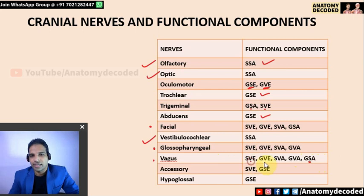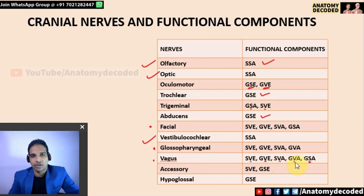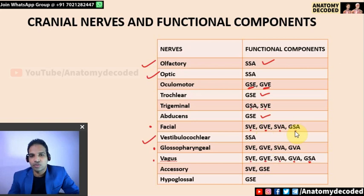Special visceral efferent refers to pharyngeal arch muscles; GVE refers to glands and muscles of the GI and respiratory tracts; special visceral afferent refers to taste sensations; and general visceral afferent covers pain, temperature, and similar sensations. For the facial nerve specifically: special visceral efferent because it supplies muscles of the pharyngeal arches; GVE because it supplies glands including the submandibular, sublingual, and lacrimal glands; special visceral afferent for taste sensations from the anterior two-thirds of the tongue; and general somatic afferent for certain skin sensations around the ear.